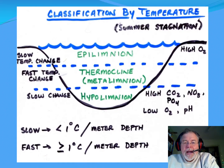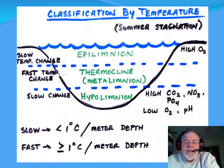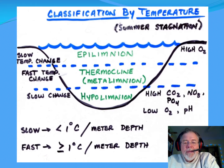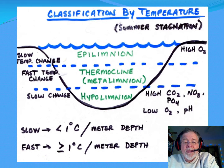Let's look at classification by temperature — meaning temperature change. This is a lake in summer stagnation. During the summer, light heats up the water, but since light doesn't penetrate all the way to the bottom, it's really heating up the surface while the bottom stays cold. You end up with a differential in density, with warmer water at the top and colder water at the bottom.